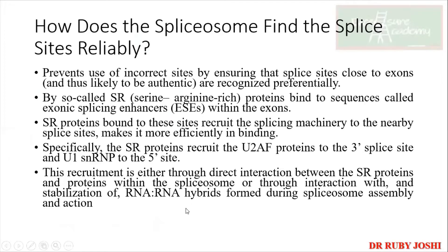Now let's talk about how the spliceosome ensures it is splicing at the correct sites. They prevent use of incorrect sites by ensuring splice sites are close to the exons and are recognized preferentially. There is a different set of proteins called SR proteins — serine-arginine-rich proteins — which bind to regions called exonic splicing enhancers (ESEs).